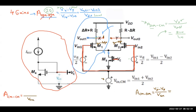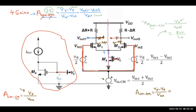For the half-circuit analysis of common mode gain, nodes at the circuit's axis of symmetry become open circuits this time. There is an impedance at this middle node — call it ro3 from transistor 3. This impedance gets split: in the half circuit it becomes two resistors of 2·ro3 each, one per side.